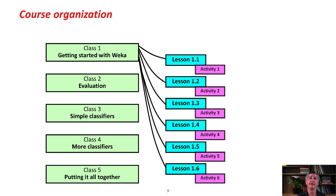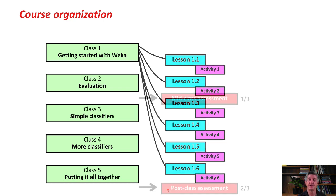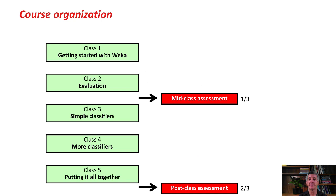These are the lessons in Class 1 — six lessons. Each lesson comprises a short video, five to ten minutes like this one, followed by an activity — something that involves you doing something yourself. You don't learn by me talking to you; you learn by actually doing things. We have lots of activities that involve using the Weka workbench. In the middle of the class is a mid-class assessment, and at the end there's a post-class assessment. The marks for these are combined, and if you get more than 70%, you'll get a certificate from the University of Waikato certifying that you've completed this course.